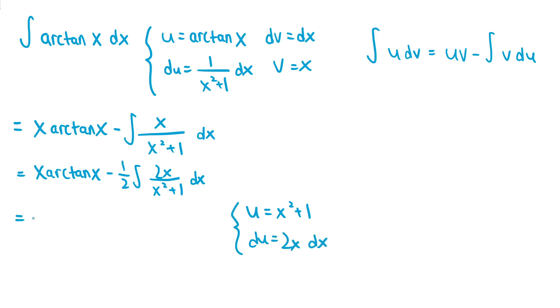So this expression is just equal to x arctan of x minus 1 half times the integral of 1 over u du, since the 2x dx is just replaced by the du in the new expression, and x squared plus 1 in the denominator becomes the u.